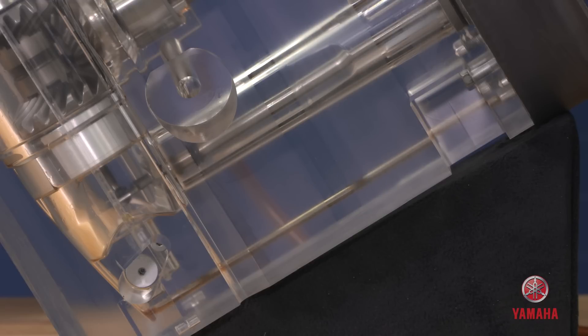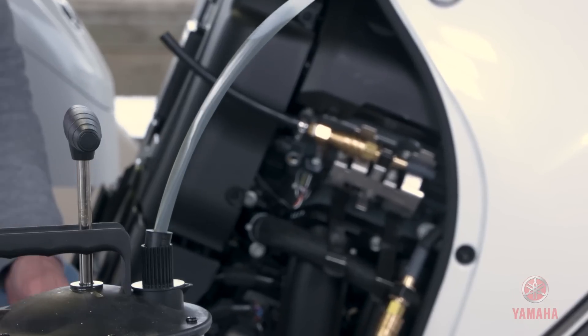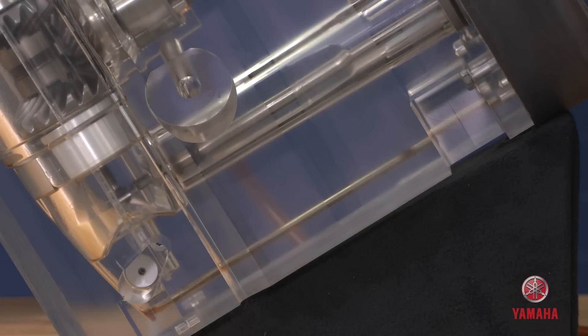In this example, it's easy to see when the gear case oil is completely extracted, but of course a normal gear case is not transparent. Watch the extraction tube to monitor the progress. Once you see the extraction tube running clear with no oil in the tube, all the oil has been extracted from the gear case.